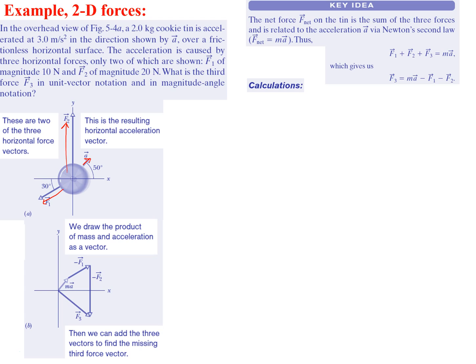The net force on the tin is the sum of all three forces, and it's related to the acceleration by Newton's second law: F equals Ma. So we start with our equation F_net equals Ma. We want to add all the forces up on one side, then set that equal to mass times the acceleration of the object. If we rearrange this equation to solve for F3, we subtract everything over to the other side, leaving F3 by itself.